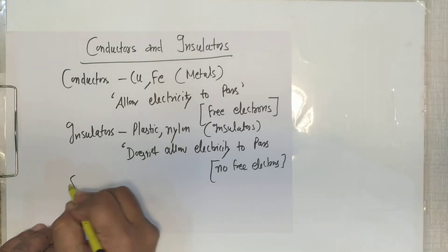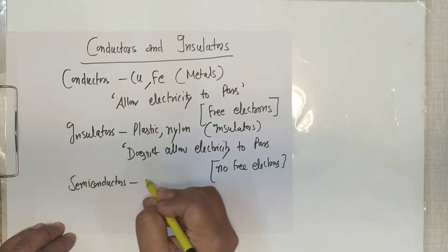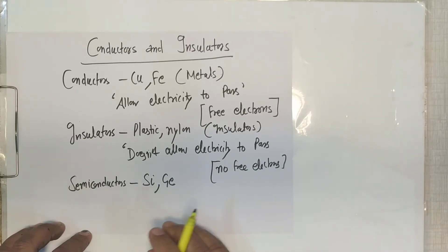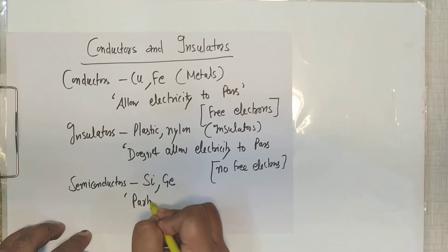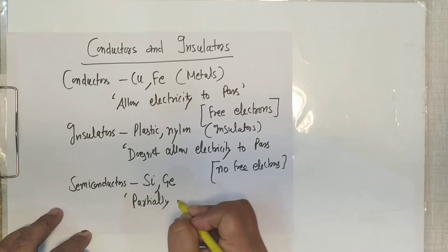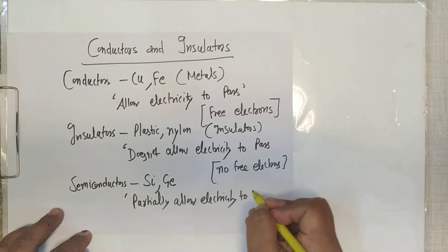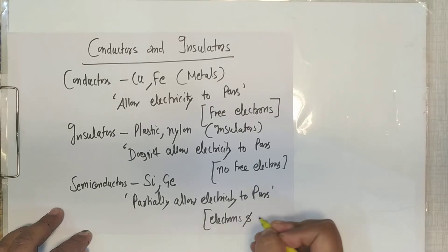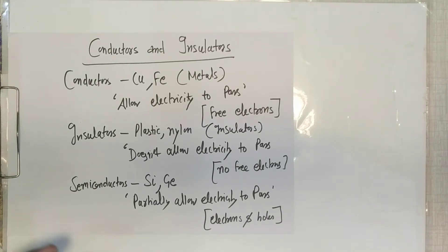We also have semiconductors, though not covered in this unit. Semiconductors include silicon and germanium, also known as metalloids. They partially allow electricity to pass and have electrons and holes as their charge carriers or current carriers.